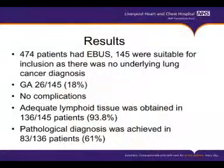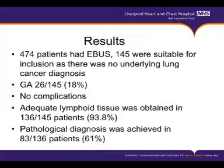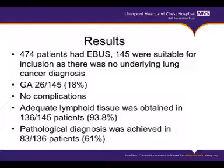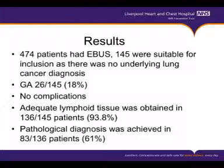There were 474 patients who had EBUS in that period from June to May, and 145 of these were suitable for inclusion as there was no underlying lung cancer diagnosis. The majority were able to have the procedure done on conscious sedation. We used general anaesthetic in 26 patients, about 18%. We did not report any complications. We were able to get adequate lymphoid tissue in 136 of these 145 patients, about 93.8%.